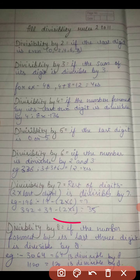So this is divisible by 7. For 392, 39 minus 2 into 2 equals 35, and we know 7 times 5 equals 35. So it is divisible by 7.